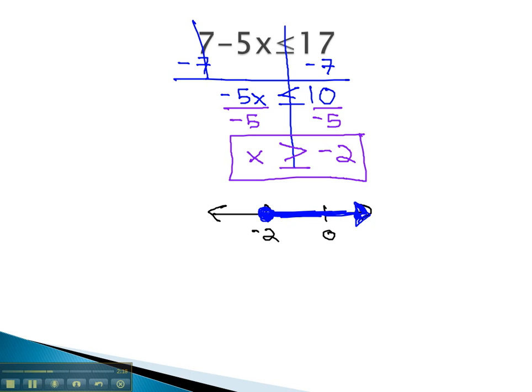We can also represent this inequality using interval notation. Interval notation is small, comma, large. The small number's negative 2, comma, the largest number on the graph goes off forever, is infinity.